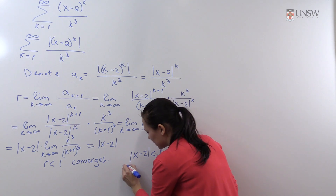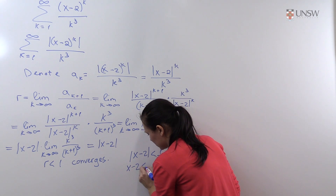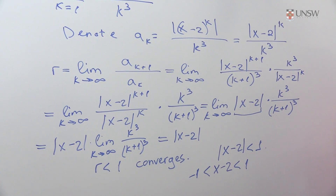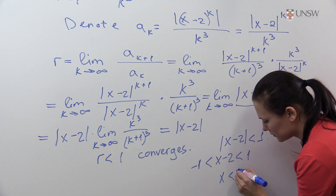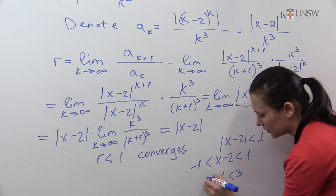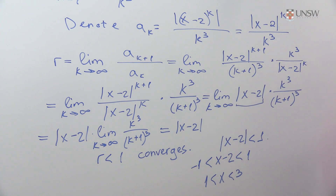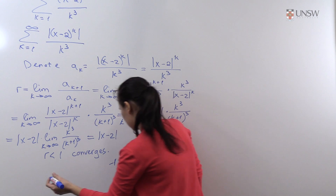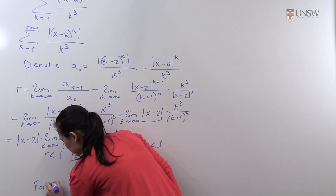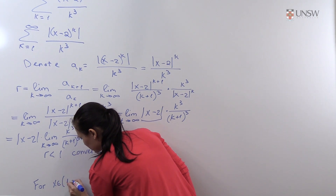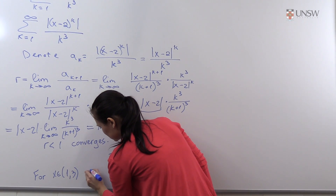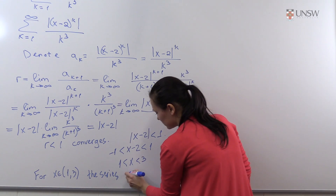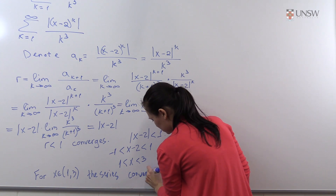Rewriting this, we get minus 1 less than x minus 2 less than 1, which is equivalent to x less than 3 and x greater than 1. So the ratio test tells us that for x in the open interval (1, 3) the series converges absolutely.